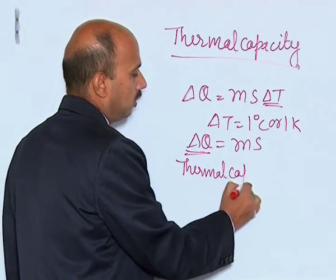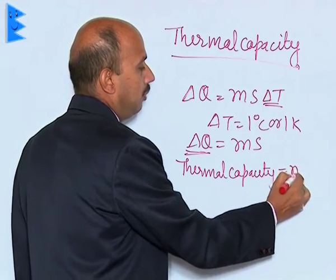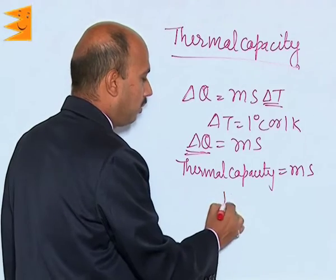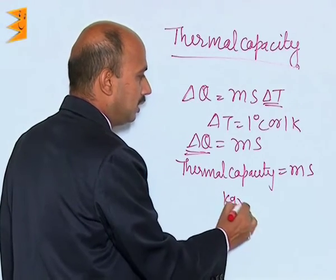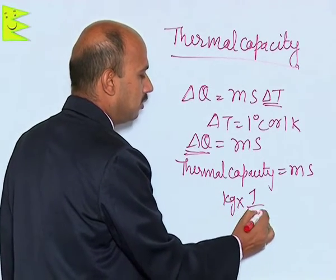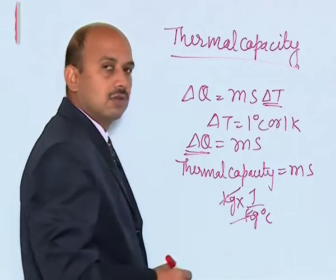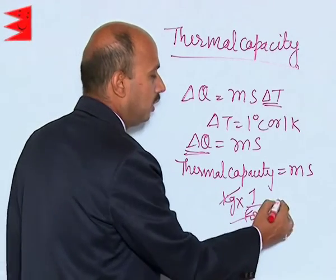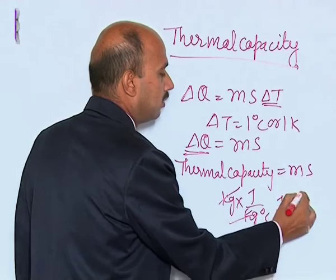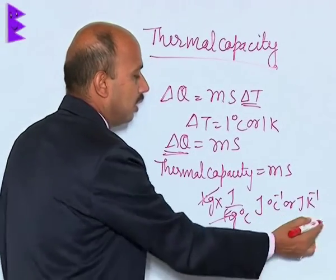Thermal capacity is equal to M times s. Taking its unit: kg multiplied by joule per kg degree Celsius — the kg cancels — so you get the unit as joule per degree Celsius or joule per Kelvin. This is the SI unit of thermal capacity.